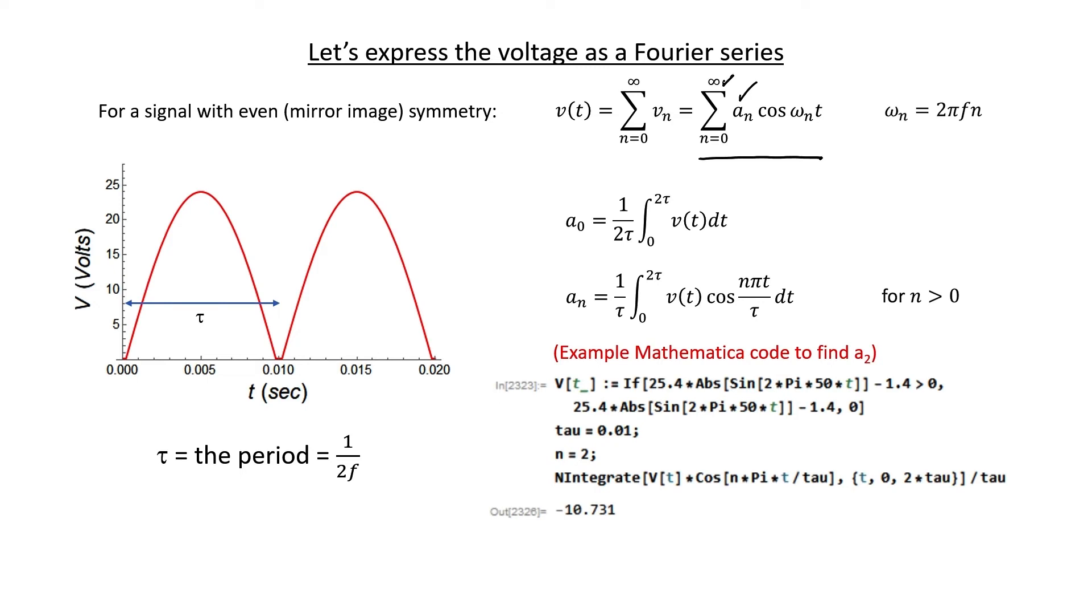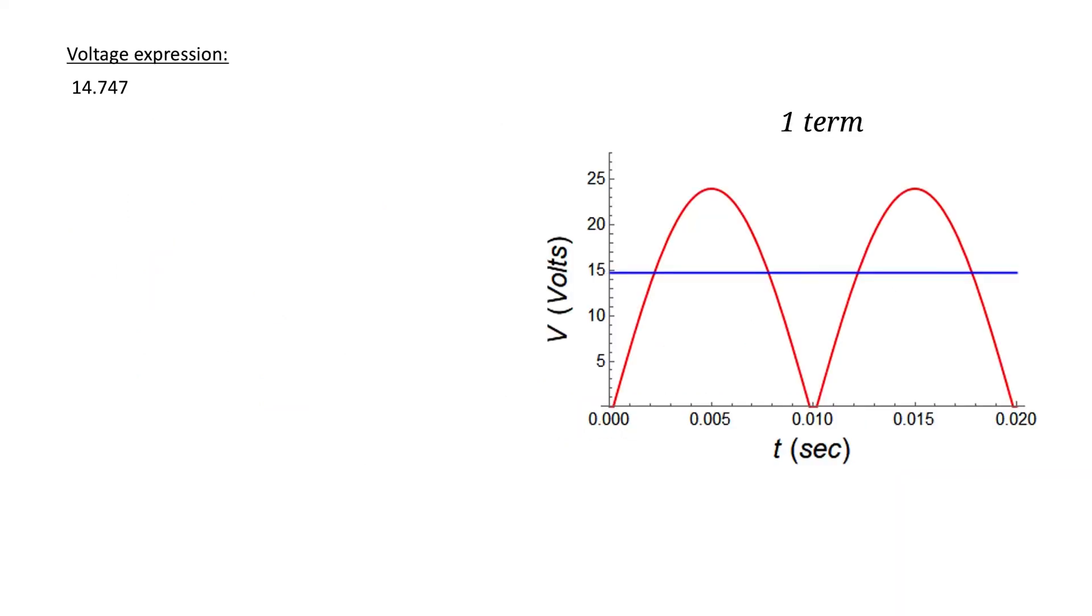Let's take a look at how the signal gets better and better the more terms we add to the series. Here's what it looks like with just one term. This gives us the DC average. Here's what it looks like with two terms, three terms, five terms,